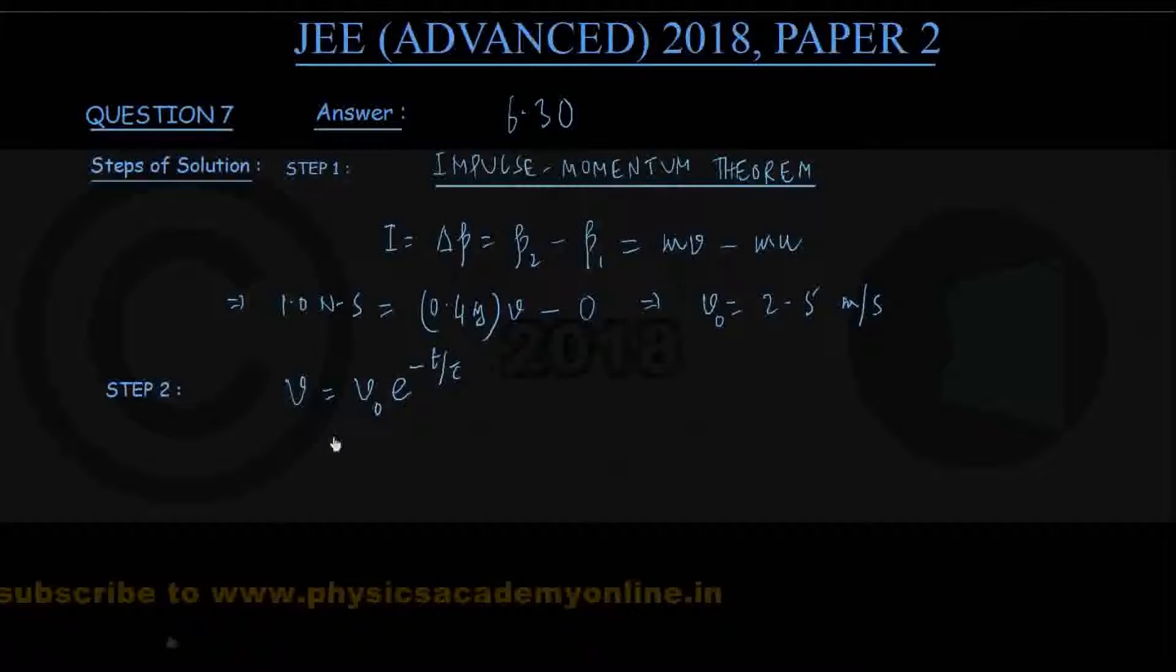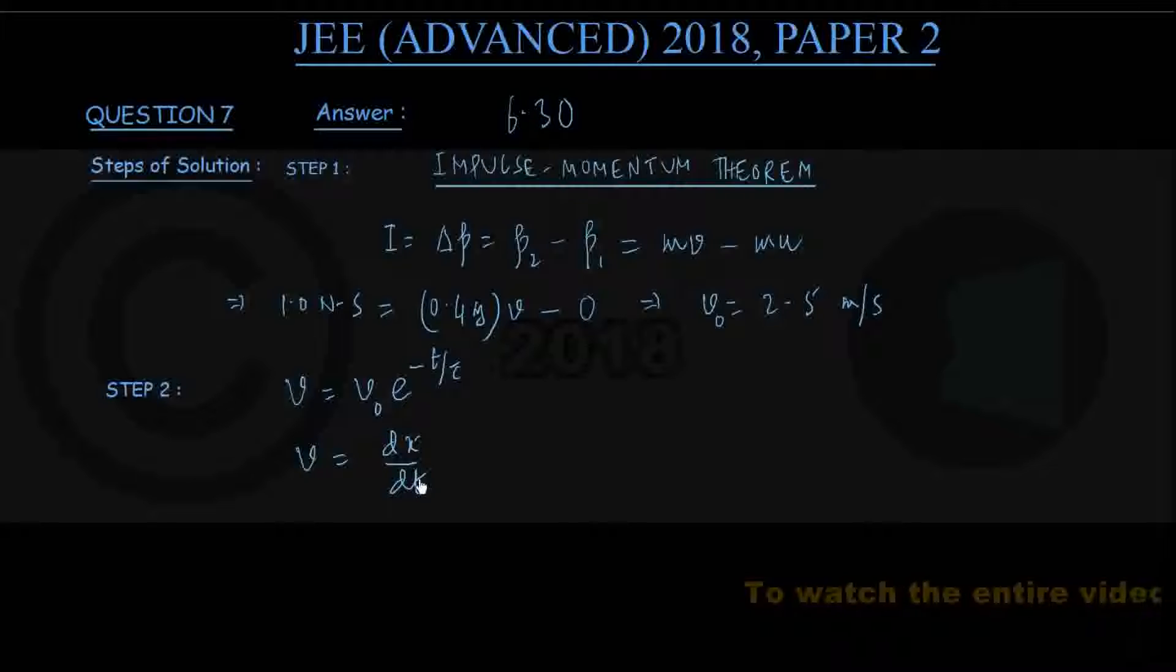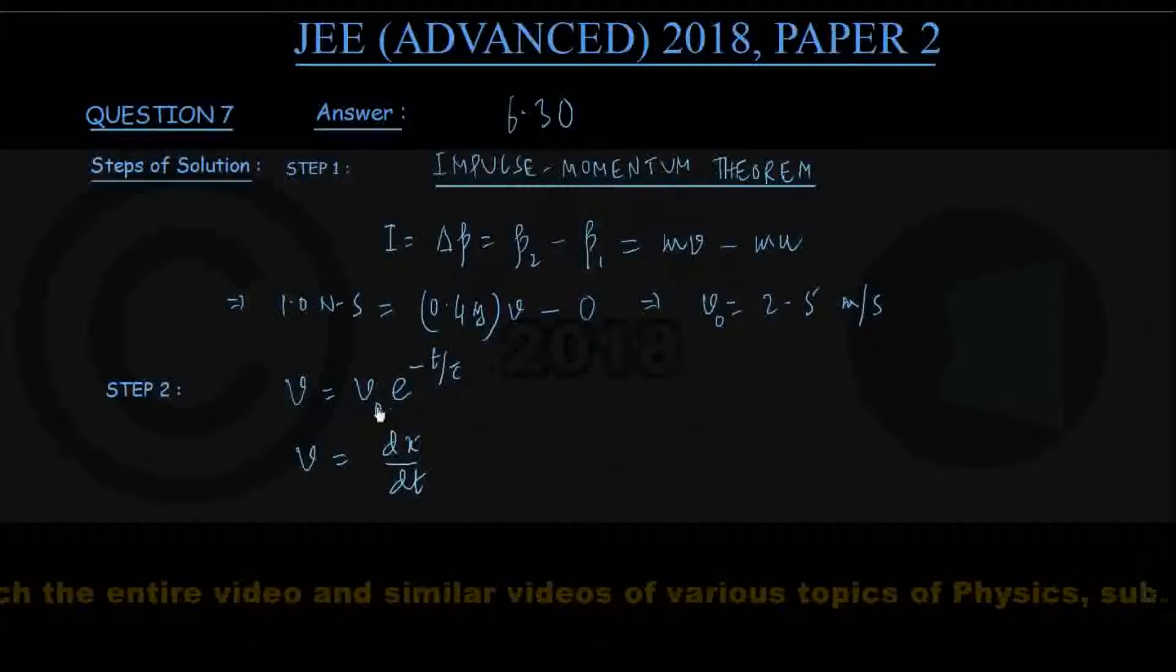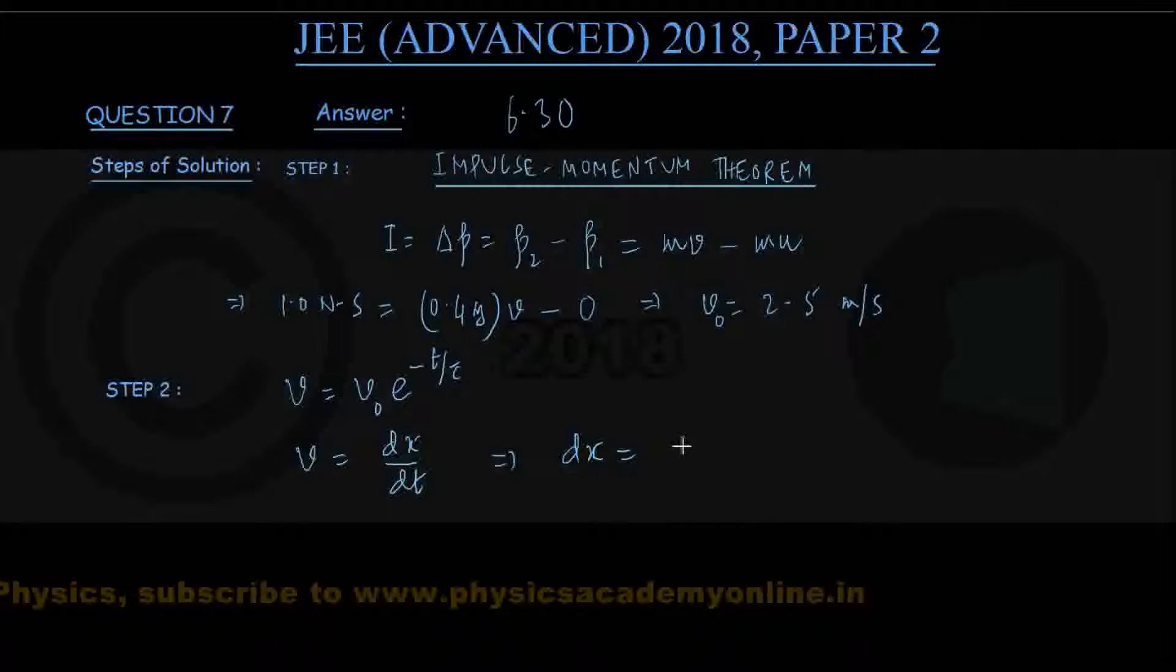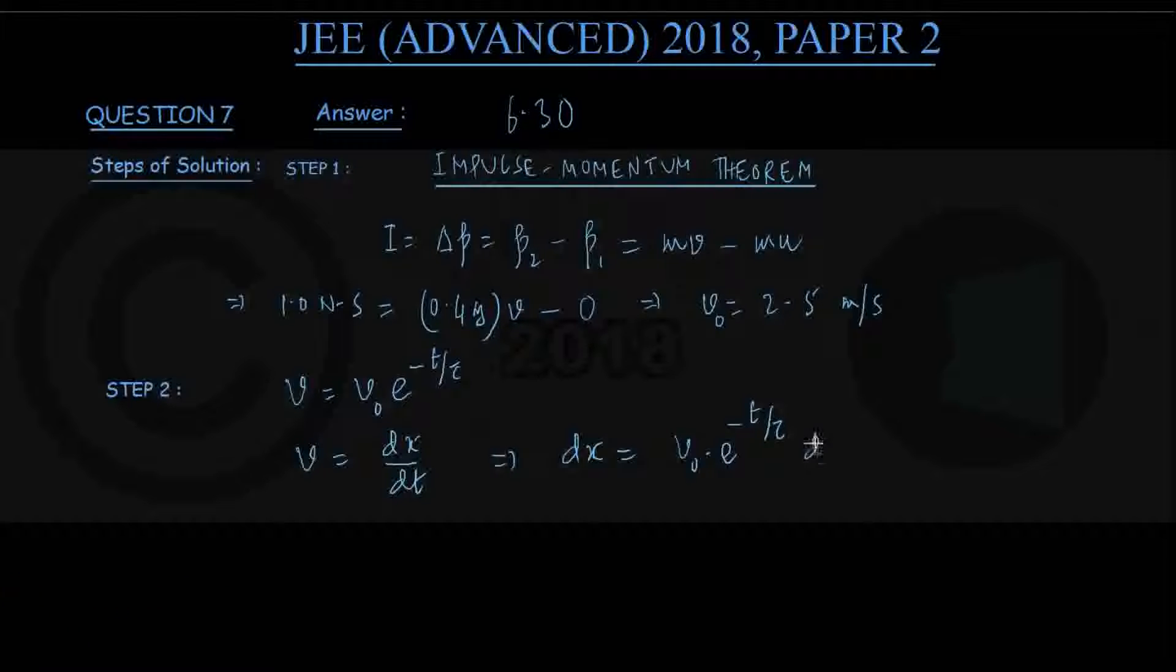Since we are looking for the displacement of this block in a given time, we shall write this velocity as dx/dt in derivative form, the rate of change in the x coordinate with time. The block moves along the x axis where dx/dt is the rate of change in x coordinate with time. So dx/dt is this, and therefore we could write down dx equals v dt, that is v0 times e to the power minus t by tau times dt.